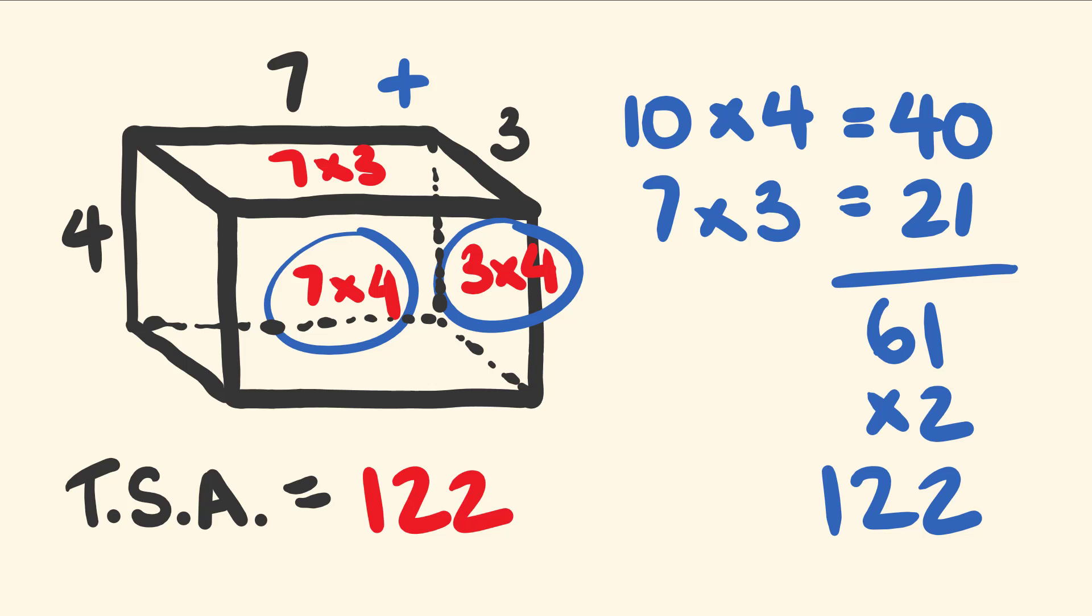So that's how you can work out the total surface area of any rectangular prism almost instantly. Start by adding 2 of the side lengths and then multiplying by the other side length. That takes care of 2 of the rectangles. Then you multiply those 2 side lengths that you added in the first place. That takes care of the last rectangle. Finally, we add our 2 answers together and multiply by 2.